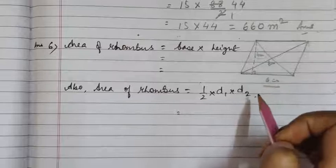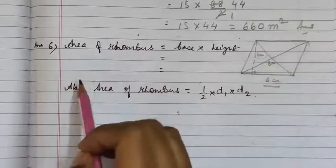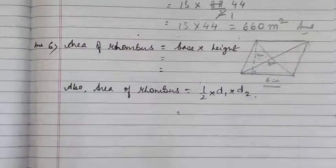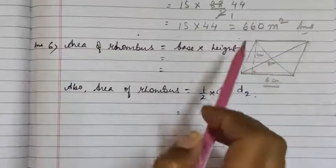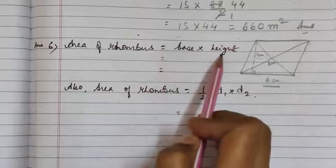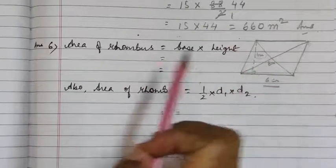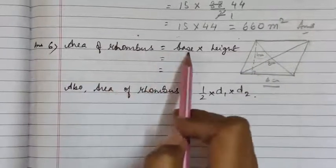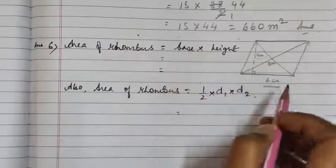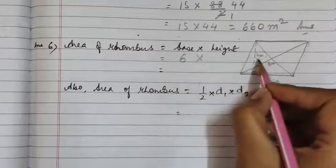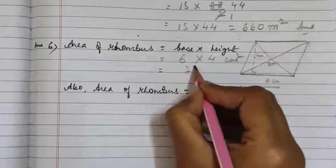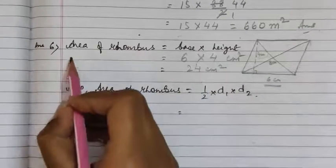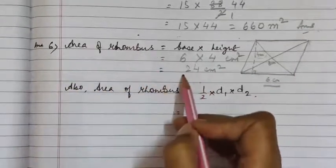Now we have to find the area. We know that a rhombus is also a kind of parallelogram, so we are going to use the formula: area of parallelogram = base × height. Since a rhombus is also a parallelogram, area of rhombus = base × height = 6 cm × 4 cm = 24 cm². So we have got the area of the rhombus as 24 cm².